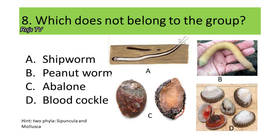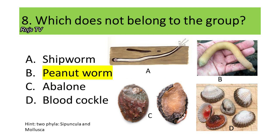If your answer is B, peanut worm, you are correct. Peanut worm belongs to Phylum Sipuncula, while shipworm, abalone, and blood cockles fall under Phylum Mollusca.